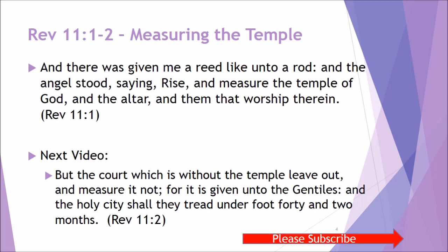Here is the verse — Revelation chapter 11: 'There was given me a reed like a rod, and the angel stood saying, Rise and measure the temple of God and the altar and them that worship therein.' So there are three things to measure: the temple of God, the altar, and them that worship therein. We're going to look at exactly what it means to measure the temple of God.